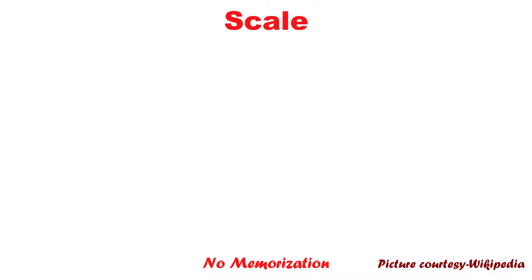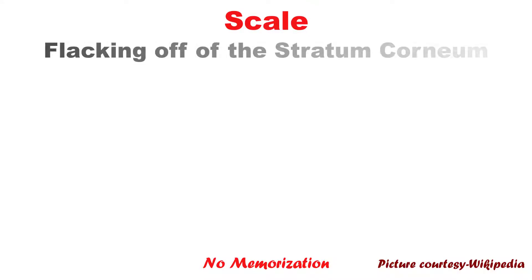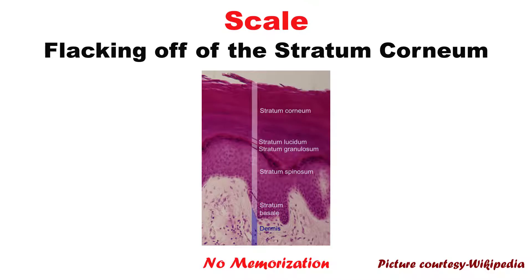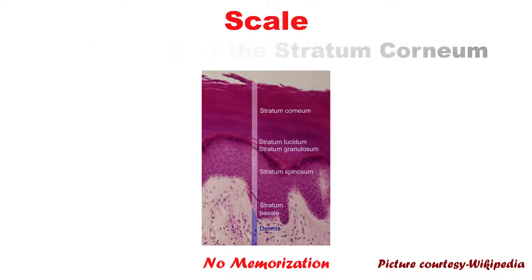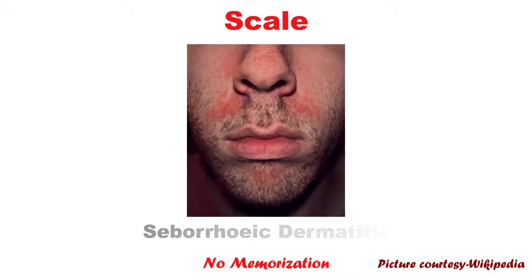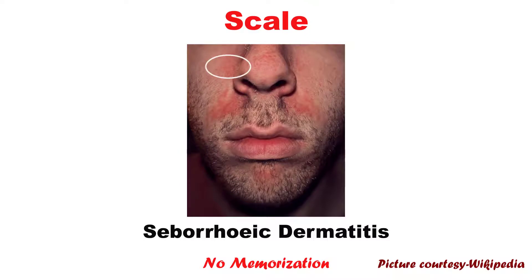Next one is scale. Scale is the flaking off of the stratum corneum, which is the outermost layer of the epidermis. For example, seborrheic dermatitis. Here you can see a picture of red, scaly, inflamed skin consistent with seborrheic dermatitis.